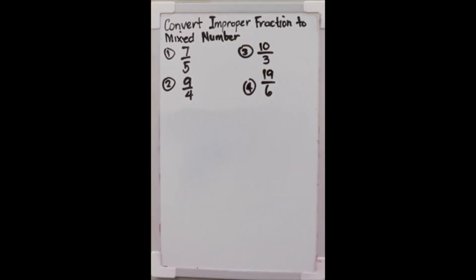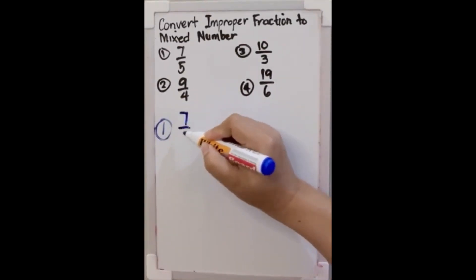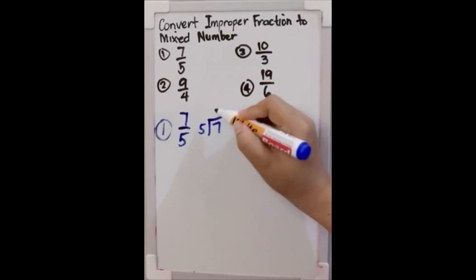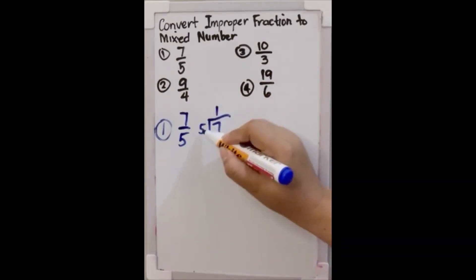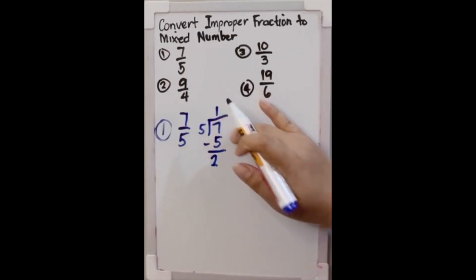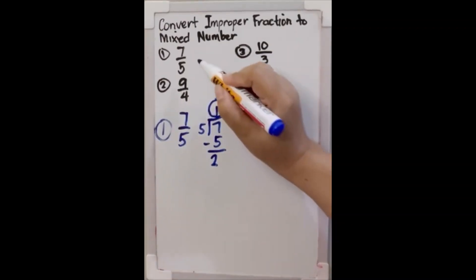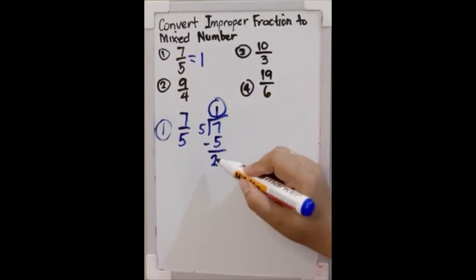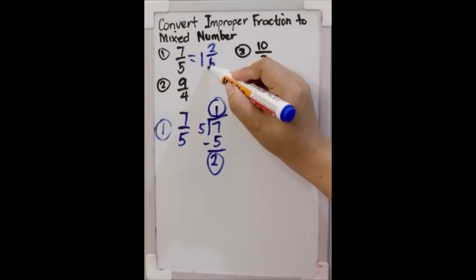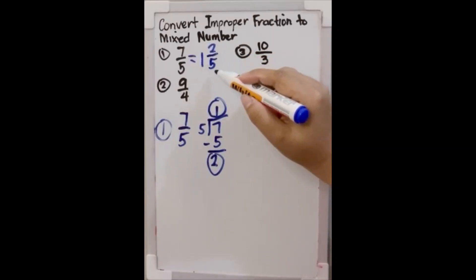Let's start with number one. We have 7 over 5. We will be dividing 7 by 5. 7 divided by 5 is 1. 1 times 5 is 5, and then 7 minus 5 is 2. Now we can write the improper fraction starting with the quotient. We write 1, then the remainder 2 over the denominator 5. So 7 over 5 is equal to 1 and 2 over 5.